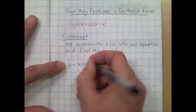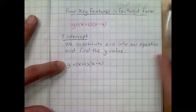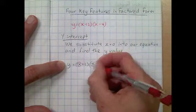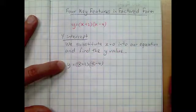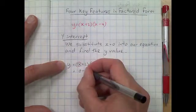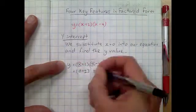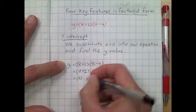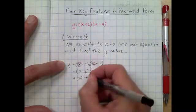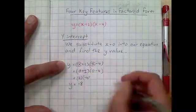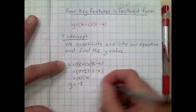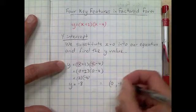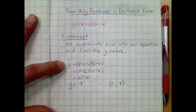So we've got y equals x plus 2 and x take 4. We take that x, put a 0, and we'll get 0 plus 2 and 0 take 4. That's going to leave us with 2 times negative 4 which gives us negative 8. Remember we want the coordinate, so our x-value is 0 and y-value is negative 8.